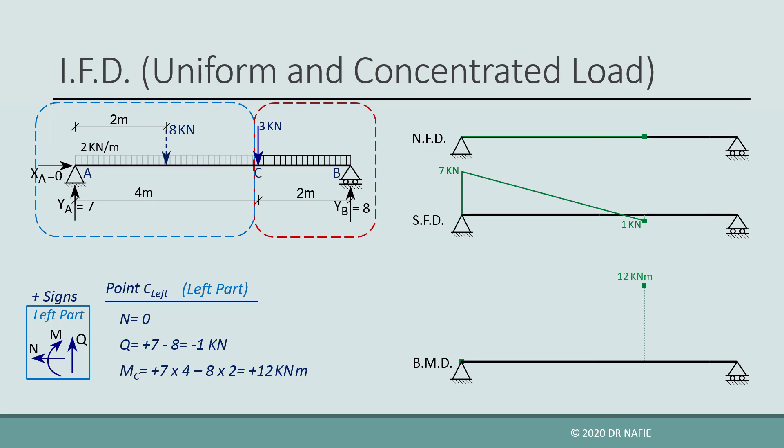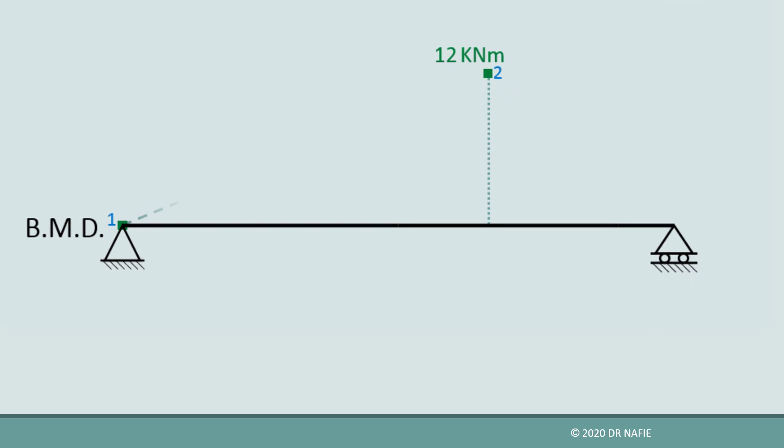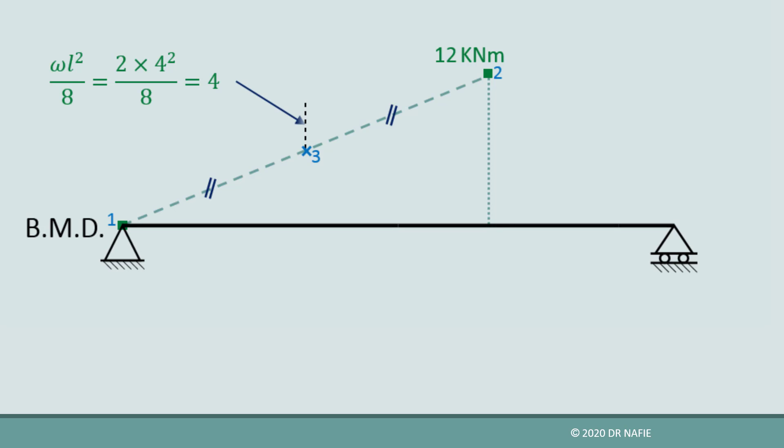The calculated value is drawn on the diagram at point C. However, we cannot connect this value to the value at point A using a straight line because the existence of the uniform load causes the diagram between points A and C to be a parabola. To draw the parabola, we first connect points 1 and 2 using a straight construction line. Then we bisect the line at point 3, and from point 3 we go up 4 kilonewton meters perpendicular to the beam to locate point 4. This value of 4 kilonewton meters is calculated from the formula WL²/8, where W is the load value and L is the distance between points A and C.